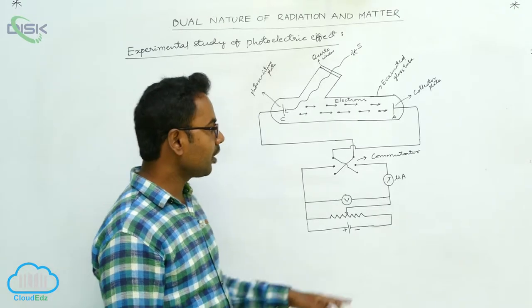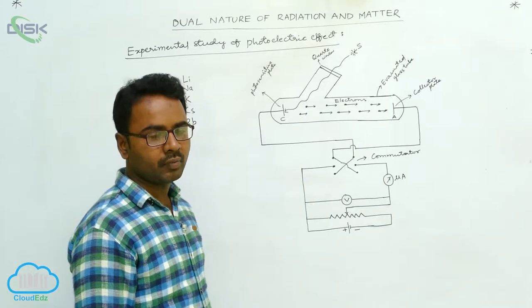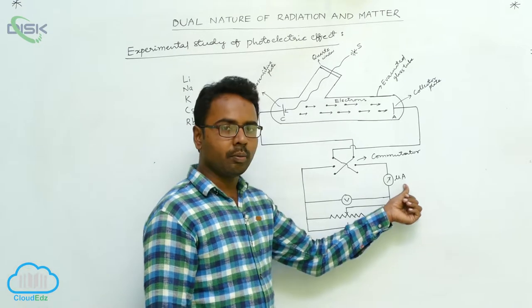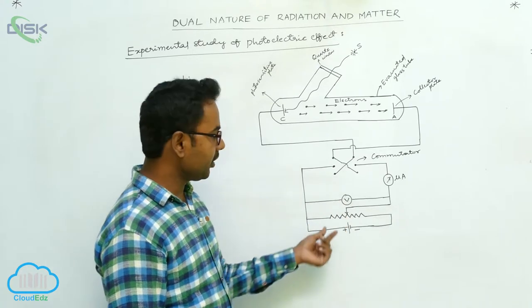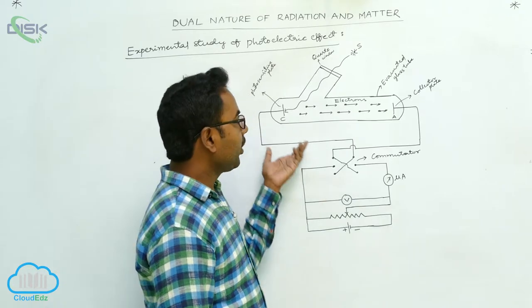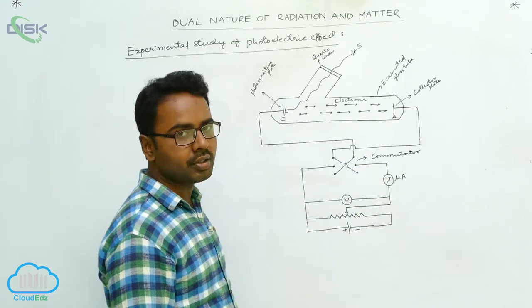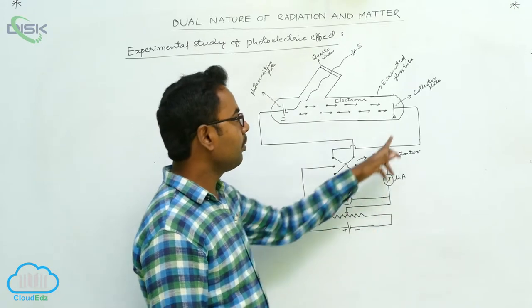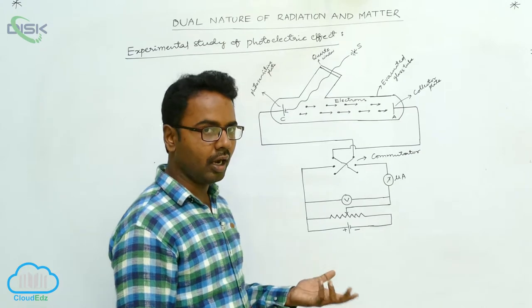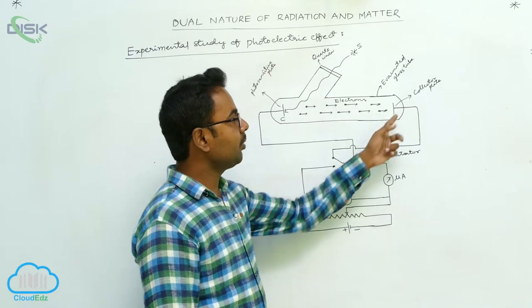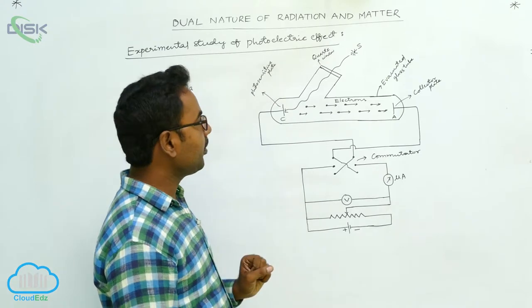The electric current in the external circuit is read by a microammeter — we use a microammeter because this current is in the order of microamperes, which is very small. To measure the potential difference between the collector plate and emitter plate, we use a voltmeter. Using a rheostat arrangement, we can change the voltage of the collector plate with respect to the emitter plate, and using the commutator we can give it positive or negative potential.